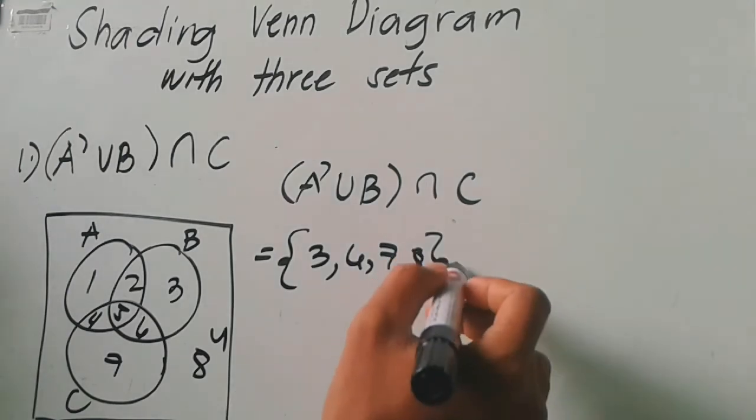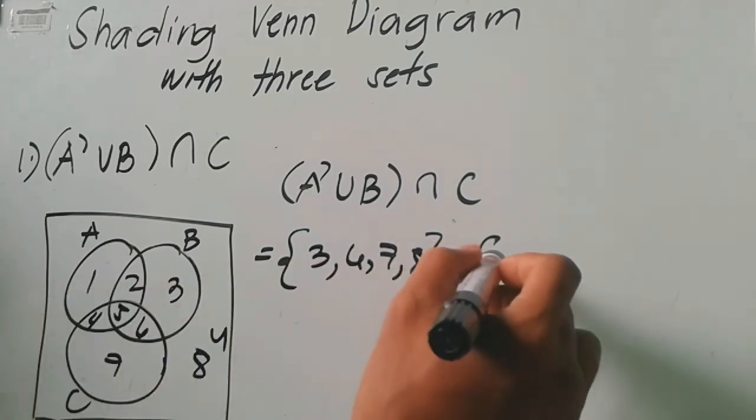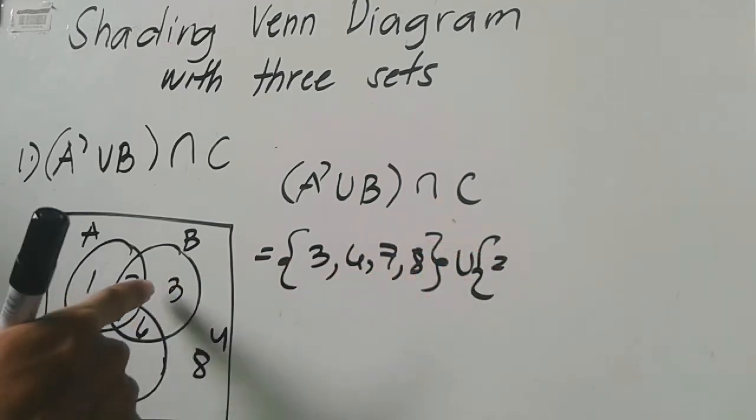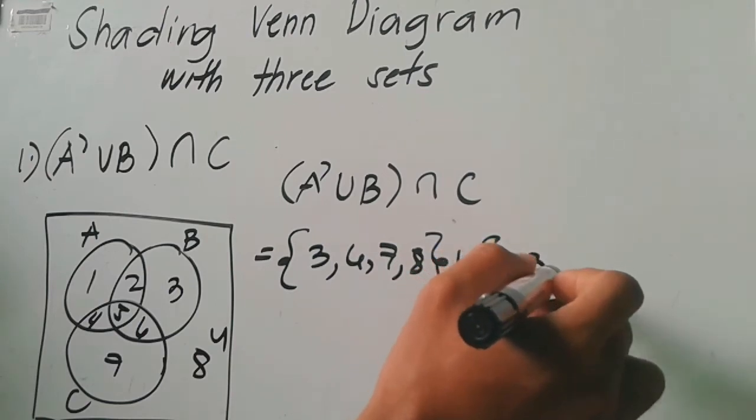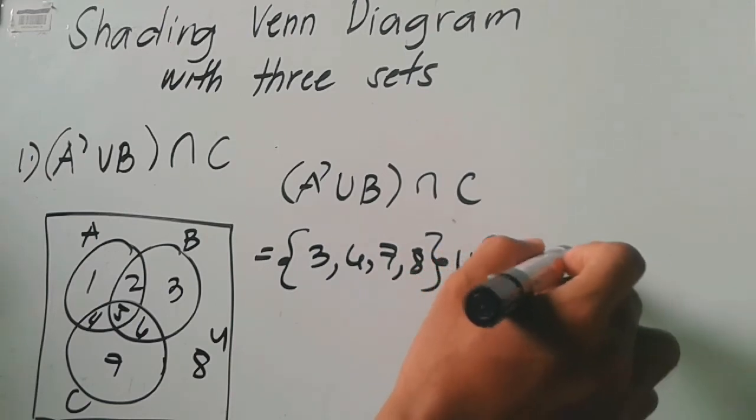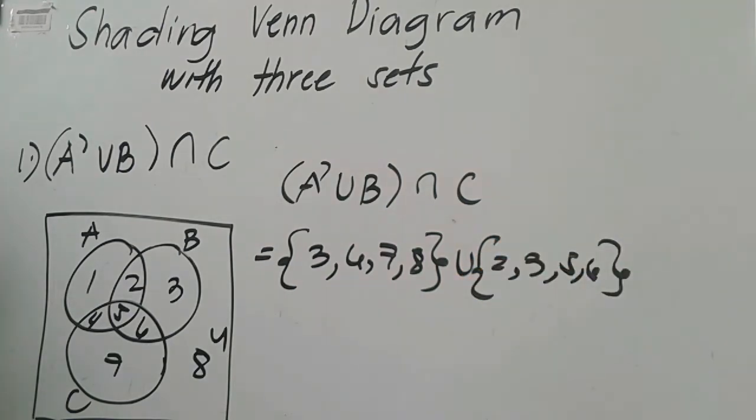And then union. B natin is two. Ito yung B natin: two, three, five, and six.